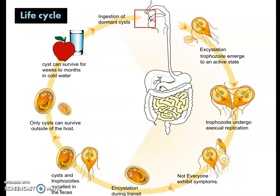The trophozoites colonize and proliferate, establishing themselves in the small intestine. At this stage, some hosts may develop disease symptoms and others may not. From the small intestine, they move to the colon region, where encystation occurs — most convert back into the cyst form, while some remain as trophozoites. They are then expelled through fecal matter. Once outside the host, trophozoites cannot survive and die.